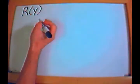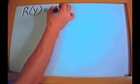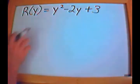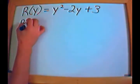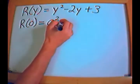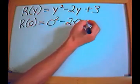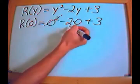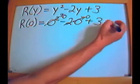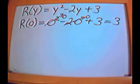Let's take another example. I have a function called r, a function of y, equal to y squared minus 2y plus 3. This is a polynomial again. What if I have r of 0? I plug in 0: 0 squared minus 2 times 0 plus 3. Zero squared is 0 and 2 times 0 is 0, so the only thing left is 3. So r of 0 equals 3.